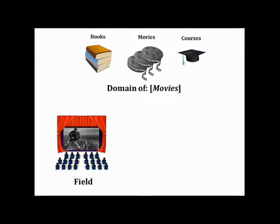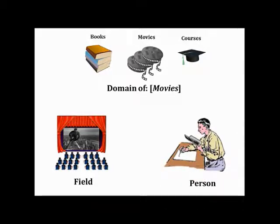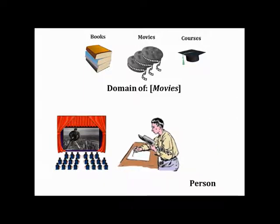So you have the domain, which is all the knowledge, up top. Then you also have the field, which is all the people — that's the audience for movies, which includes everyone who goes to the movies, people who make movies, and the critics who judge movies. That's considered the field — the people — as opposed to the knowledge up top there. And here we have a person who looks like a wannabe writer. That person would be part of a field, or many fields, in many domains, in culture.